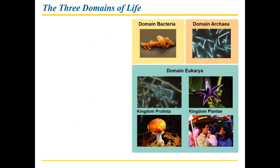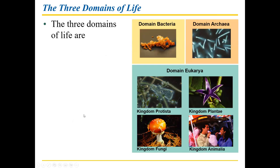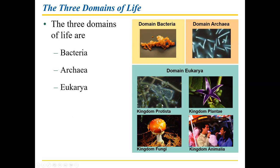What are the three domains of life? When I was in high school, they only had kingdoms. Now we have domains, which groups things into even larger groups. We have domain Eukarya — which are eukaryotes — and domain Bacteria and domain Archaea. Bacteria and Archaea are the prokaryotes: simple, no organelles, small. Eukarya is a domain that contains four separate kingdoms: Protista, Plantae, Fungi, and Animalia. Believe it or not, we are animals — we are grouped into kingdom Animalia based on our shared characteristics with other mammals and animals.